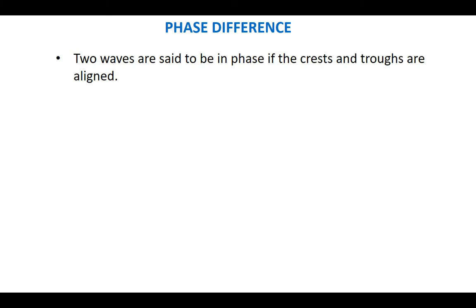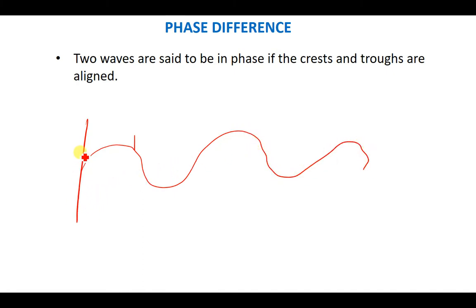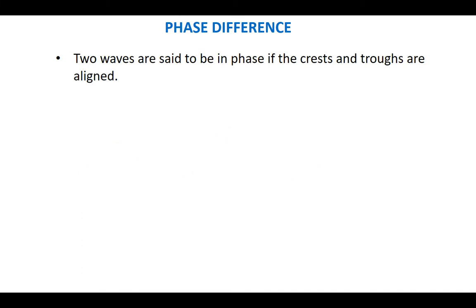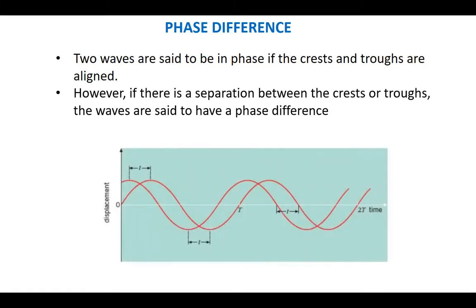Two waves are said to be in the same phase if their crests or troughs are aligned. So if you have one wave moving like this and another wave alongside it, if there is a separation between the crests and troughs of the two waves, the waves are said to have a phase difference.